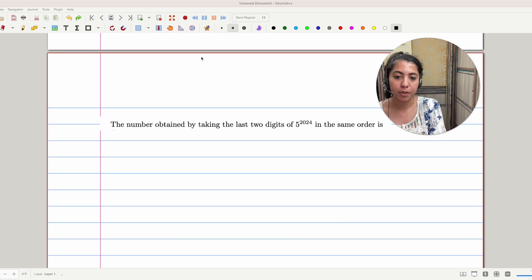This problem looks like a problem from number theory, but it is a very beautiful observation. In this question, we are asked to find the last two digits of 5 to the power 2024.